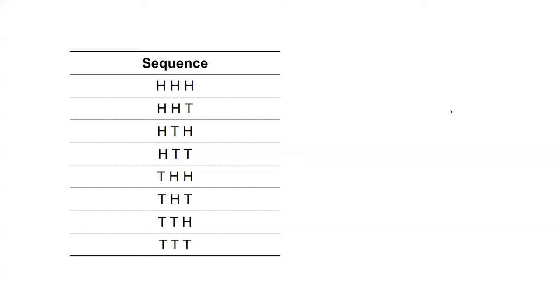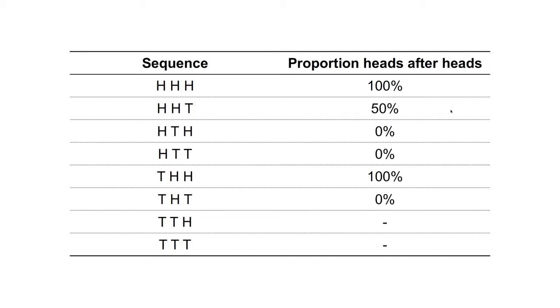Suppose you flip a coin three times. There are eight possible sequences of heads and tails, and each sequence has an equal probability of occurring. Considering these sequences, if you were to flip a coin three times and there is a head followed by another flip in that sequence, what is the expected probability that another head will follow that first head? This table shows the proportion of heads following a previous flip of heads for each sequence.